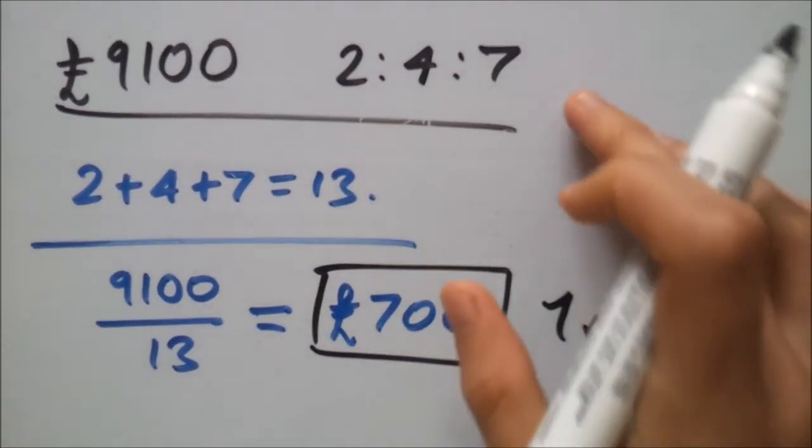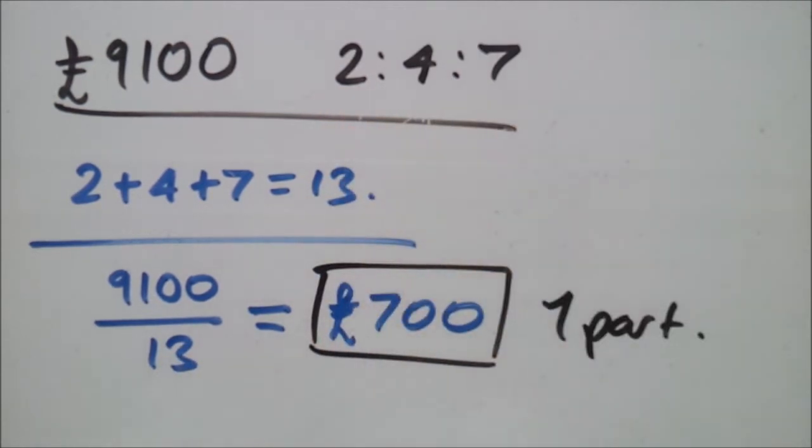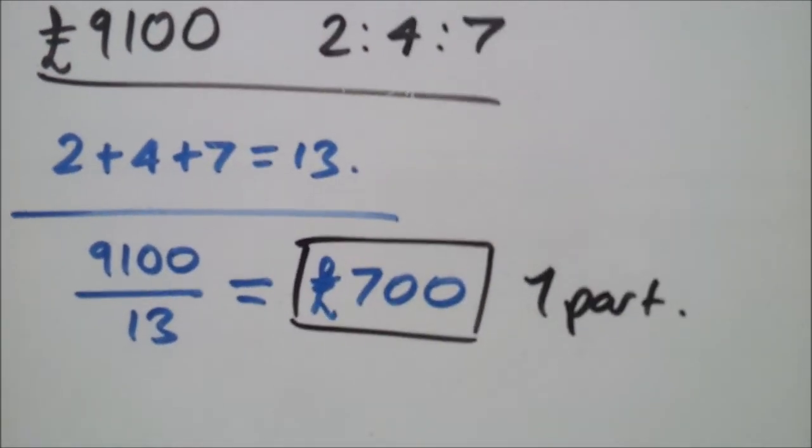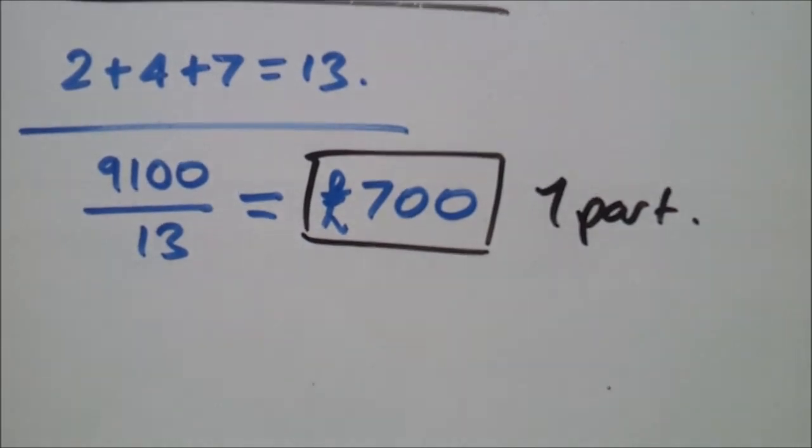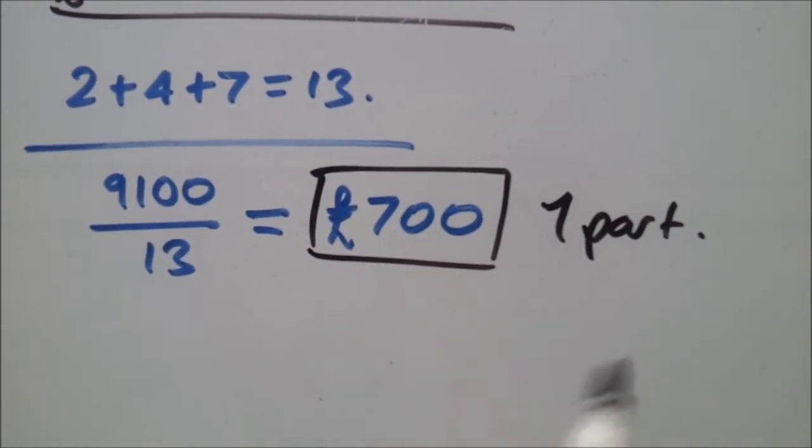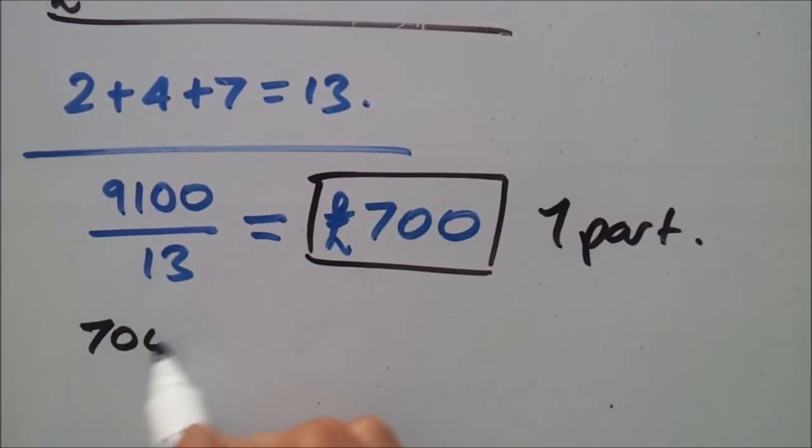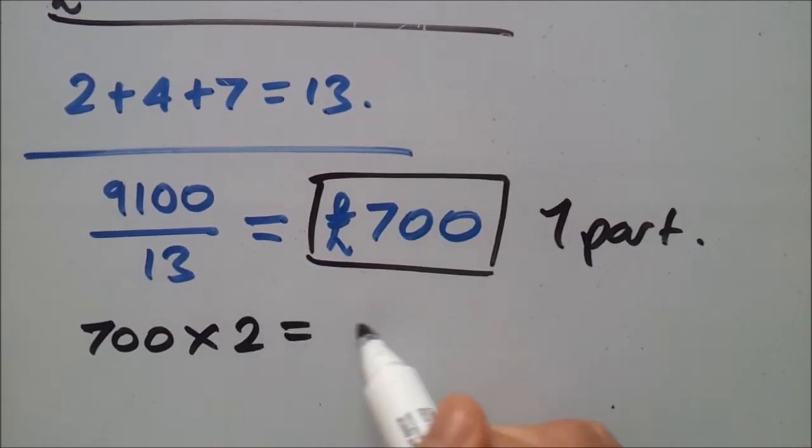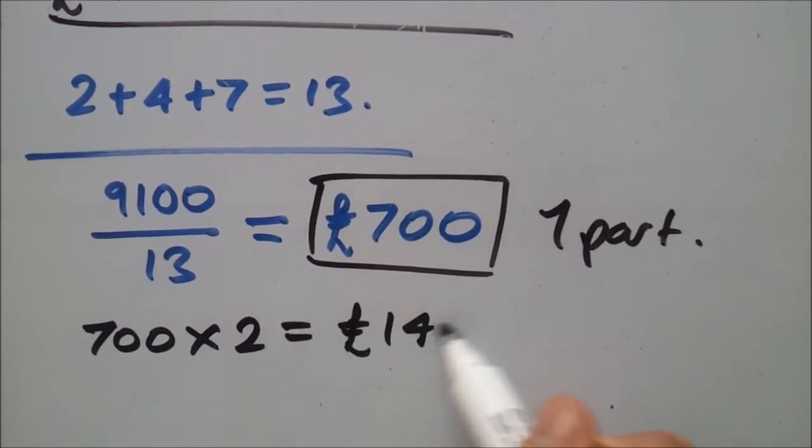The question tells us to find two parts, four parts and seven parts. So, to find two parts, we will need to take this number and times it by two. So, 700 times two gives you 1400 pounds.